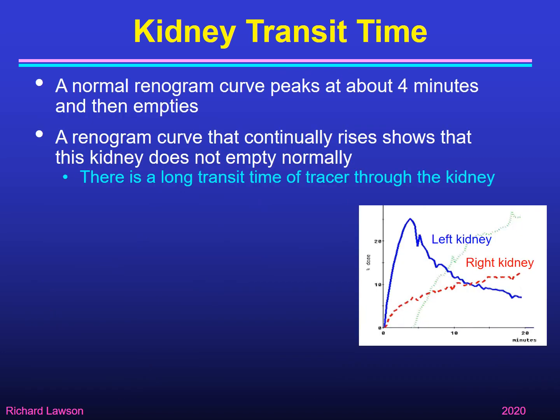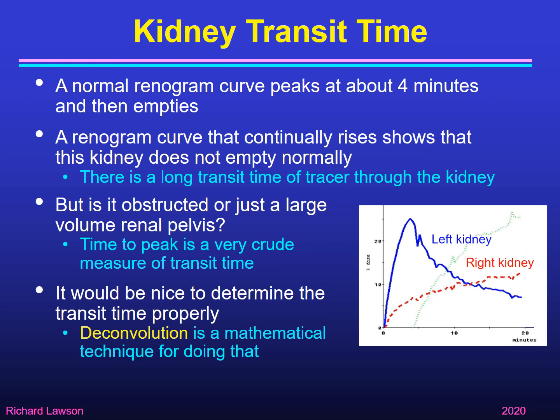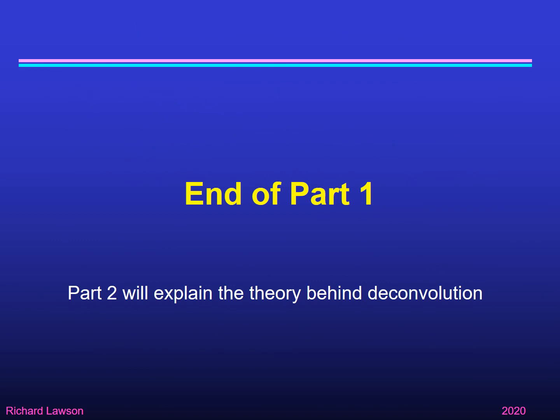We're interested in kidney transit time. A normal renogram like the one for the left kidney peaks at about four minutes and then empties, but a renogram curve like the one from the right kidney that continually rises shows that kidney doesn't empty normally — it has a long transit time for tracer through the kidney. What we'd really like to know is whether this is obstructed, meaning tracer is not coming out due to a blockage, or whether it's simply a large volume renal pelvis where it takes a long time because of the large volume. The time to peak is a crude measure of transit time, so deconvolution — a mathematical technique — is used to determine the transit time properly. That concludes part one; in part two I'll explain the theory behind deconvolution.